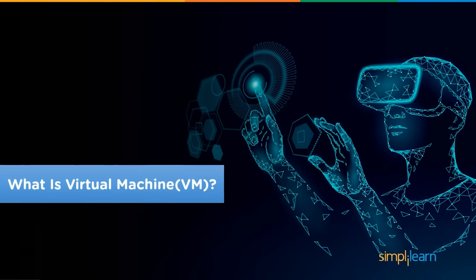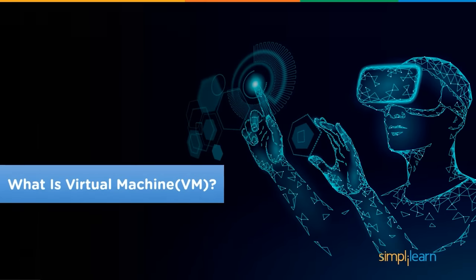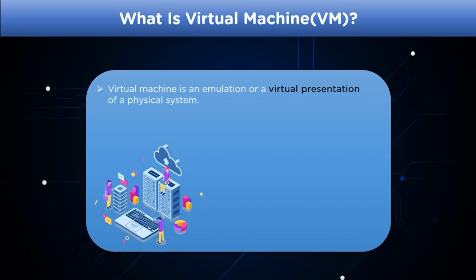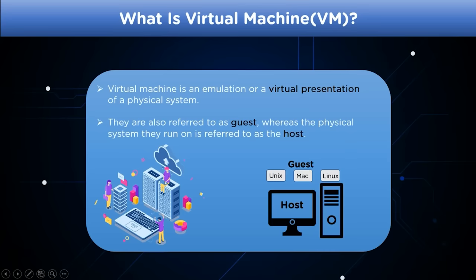Now that we understand what virtualization is, let's look at what a virtual machine is. As the name suggests, a virtual machine is an emulation or virtual representation of a physical operating system on a hardware device. Virtual machines are also known as guest OS, whereas the physical system they run on is known as the host OS.